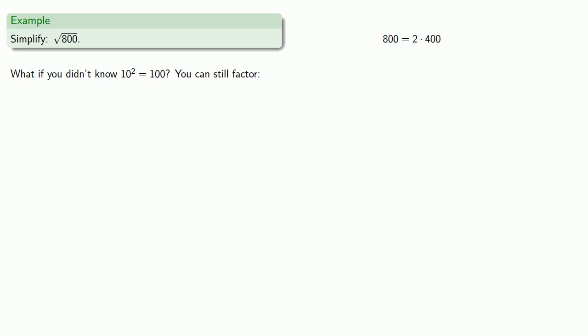But wait, 400 is also an even number, so we know that 400 is going to be 2 times something. In fact, 2 times 200. And we can continue in this way until we find the complete factorization of 800 into prime factors.